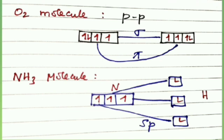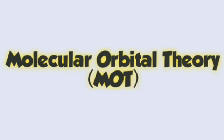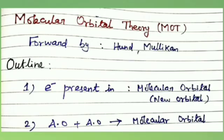The next topic is molecular orbital theory, otherwise called MOT. Molecular orbital theory was put forward by Hund and Mulliken in 1932. This theory is modern and more rational. Now we discuss a brief outline of this theory one by one.